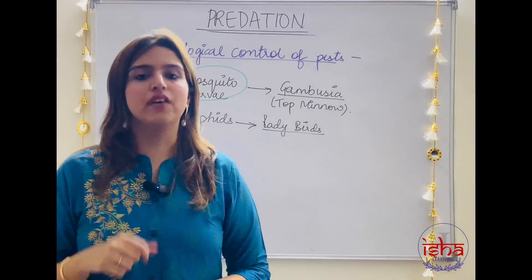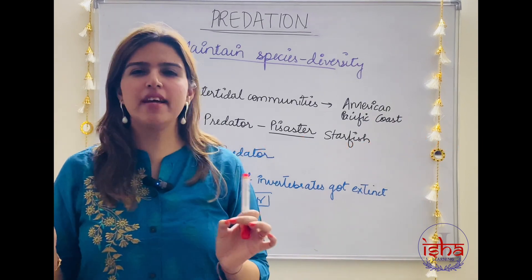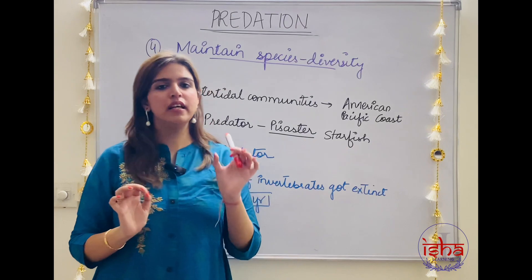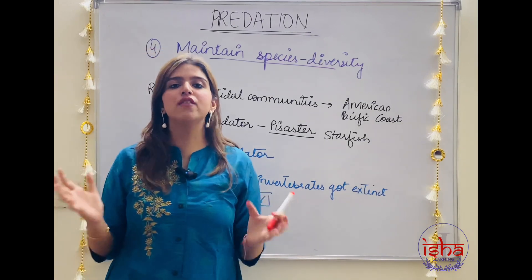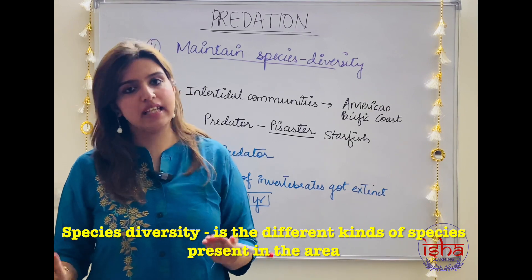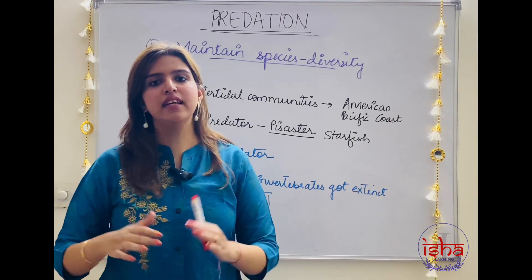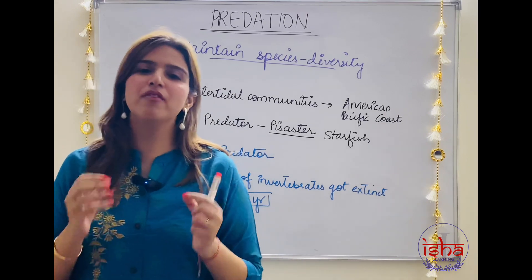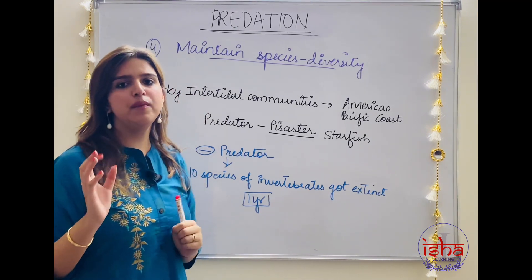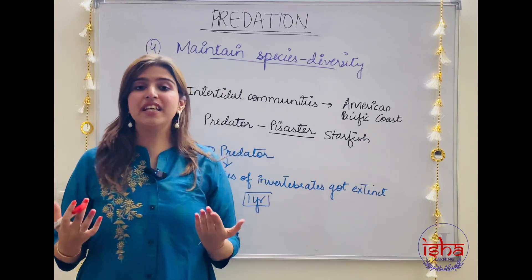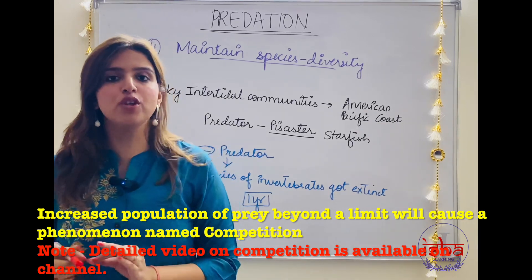Predators also help to maintain species diversity — the different kinds of species present in an area. For example, if five species are present in a room, the species diversity is five species. How does a predator help maintain species diversity? This connects to the previous point: if the prey population grows too much, they face a phenomenon known as competition — an interaction where two species compete for resources.